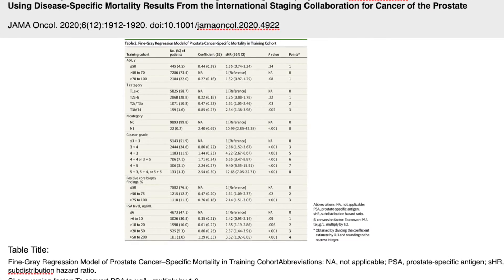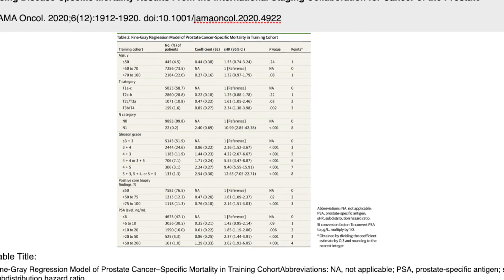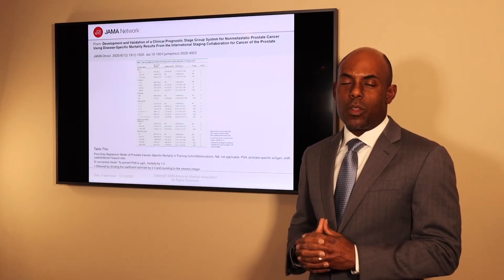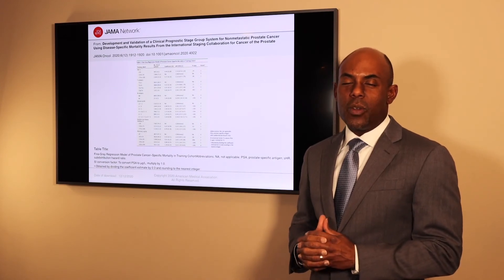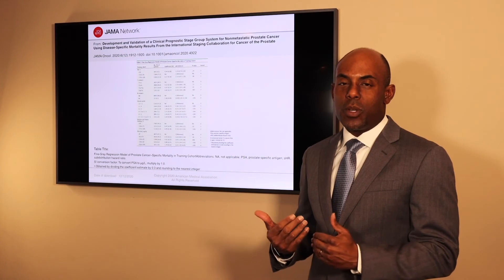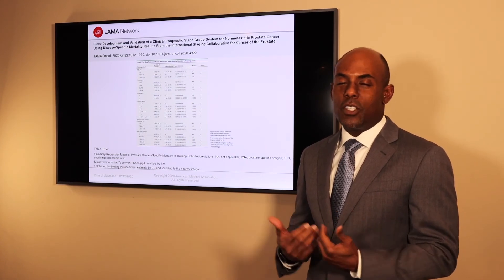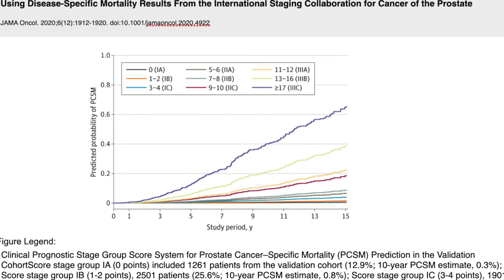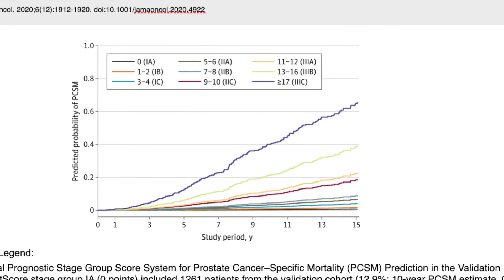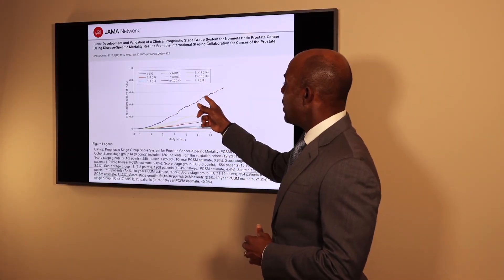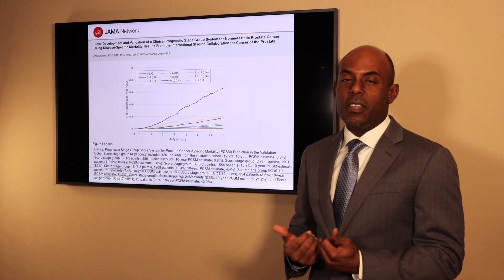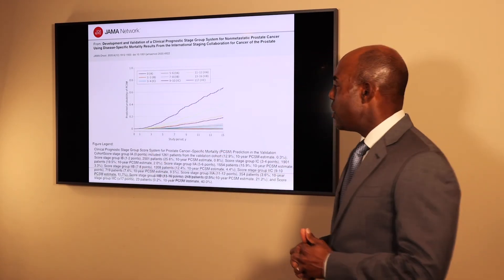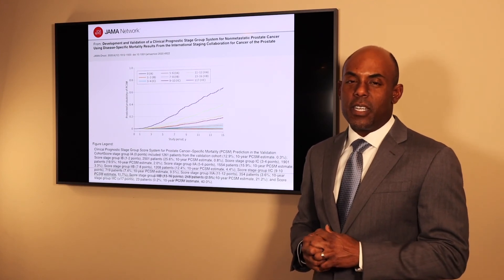This is a new proposed stratification system that may be incorporated into the ninth edition of the AJCC cancer staging system. With the new proposed SCORE system, each value is assigned a certain point value, those points are added up to give you a score, and that score can tell you the chance of dying from your prostate cancer 10 to 15 years after treatment. If you have a score of 17 or above, you could have as high as a 40% chance of dying from your prostate cancer 10 to 15 years after treatment, whereas a very low score indicates a very low risk.